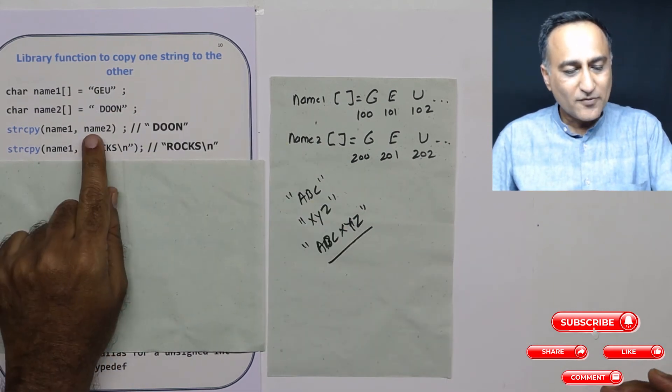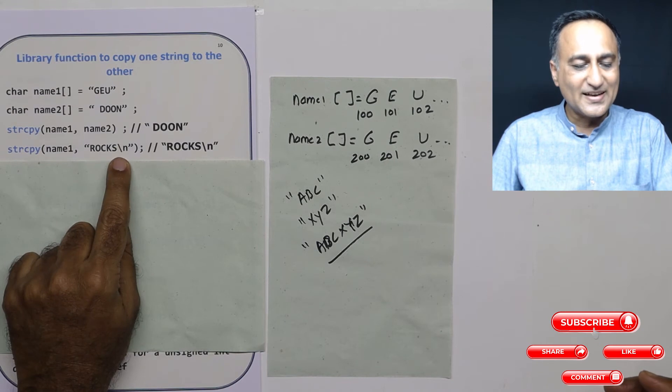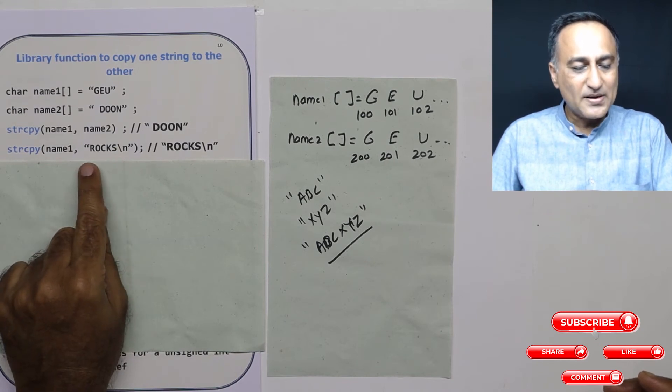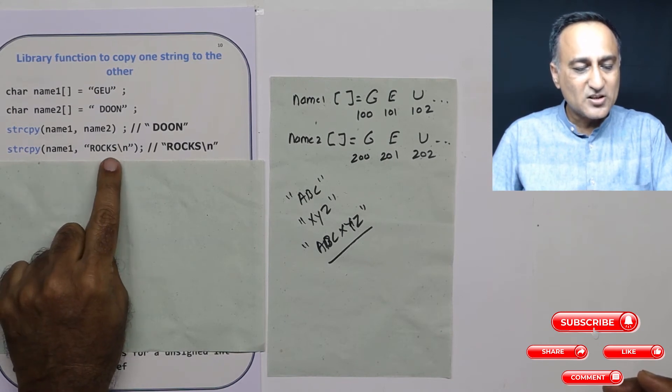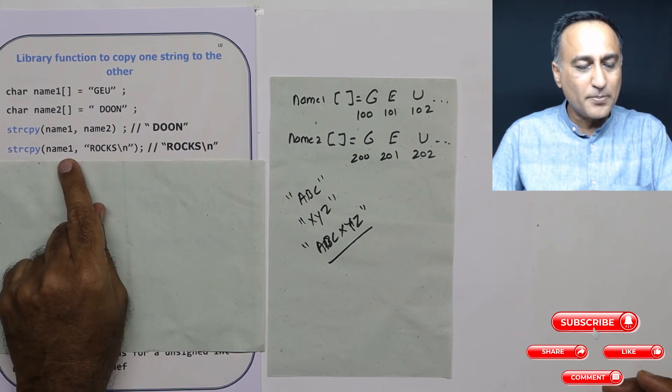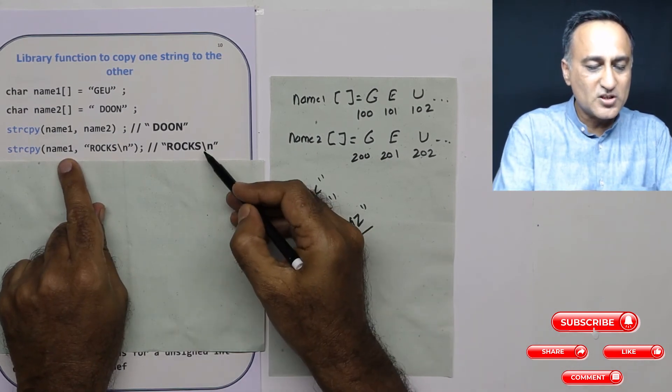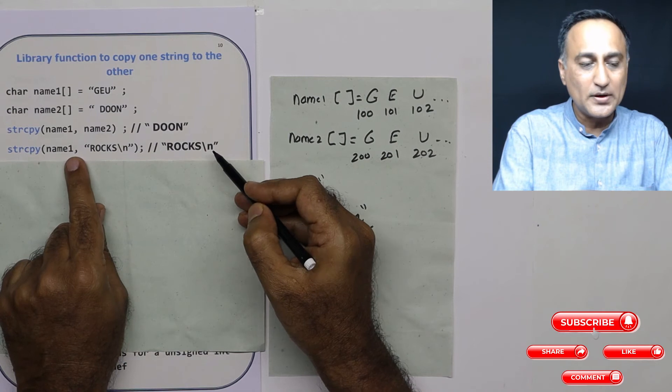In place of name2, I can also have something called as rocks. So what will happen here is when I do string copy, this rocks is going to get copied into name1. So rocks gets copied into name1.